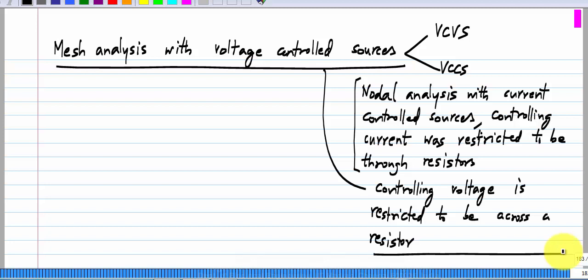What we want to do is to carry out mesh analysis without introducing auxiliary variables. If you have the controlling voltage across a current source, you have to introduce an auxiliary variable for that voltage drop. We do not want to get into that, so we have made these restrictions just to tackle only the simple cases.